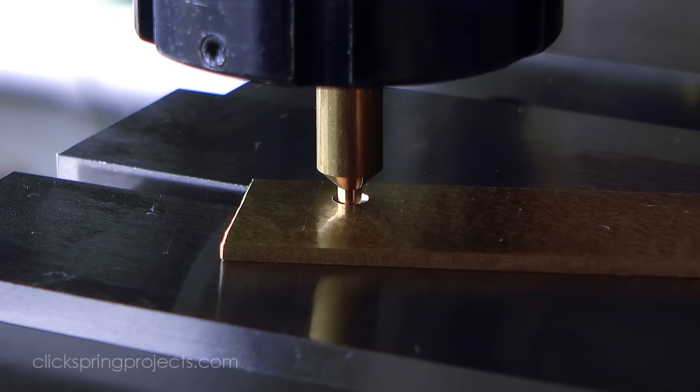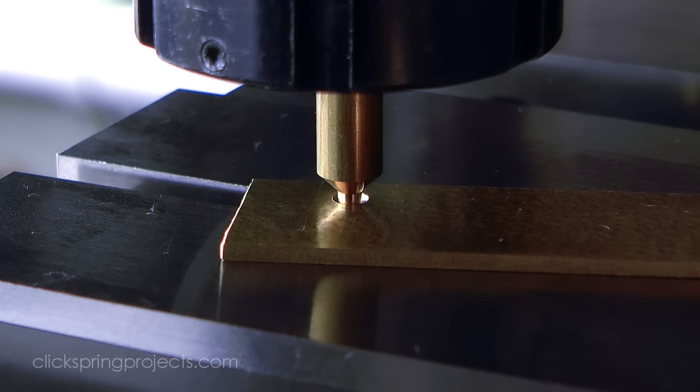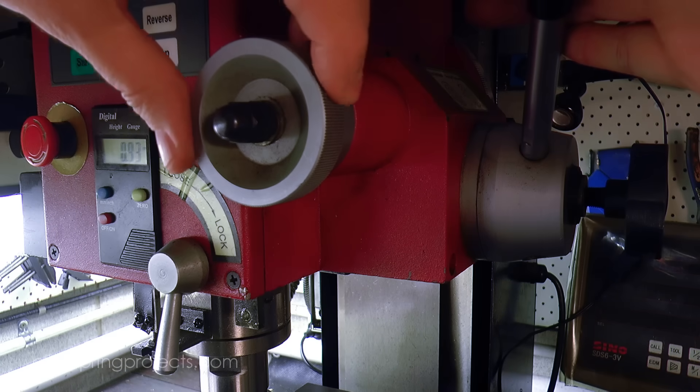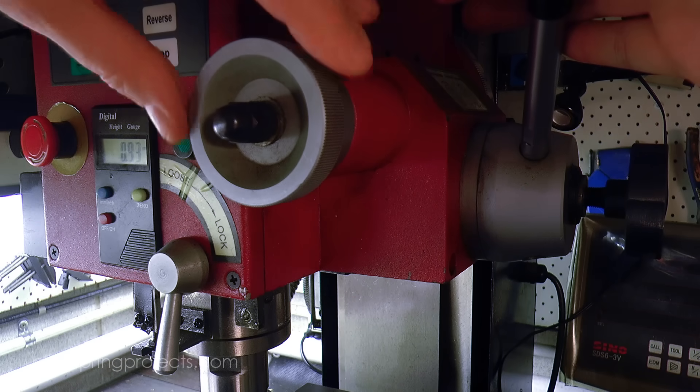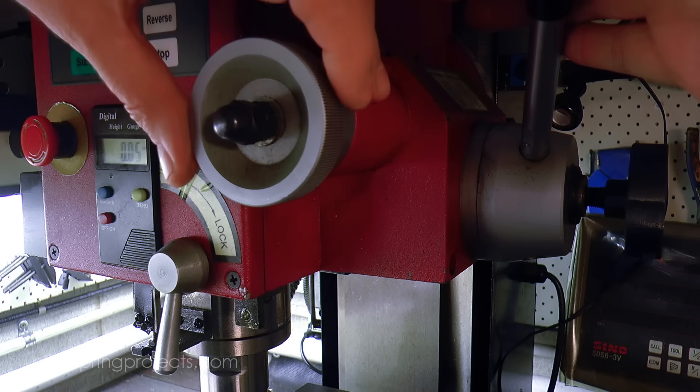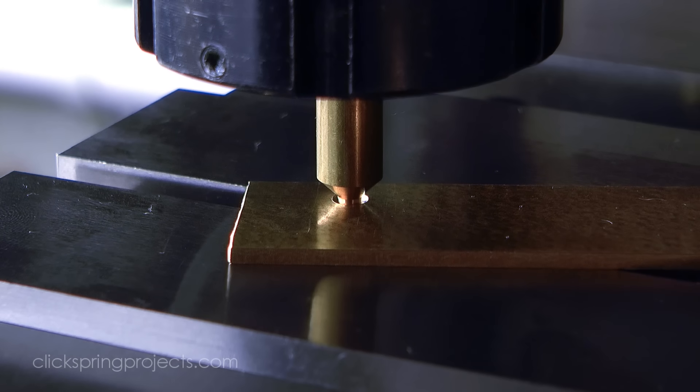With the plate still able to freely move under the pusher, the fine feed of the quill is engaged and the spindle carefully lowered. This allows the jewel to be moved with reasonable control to a specific depth in the plate or simply pushed out if required.